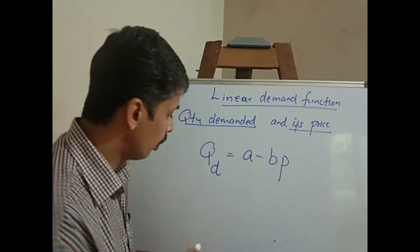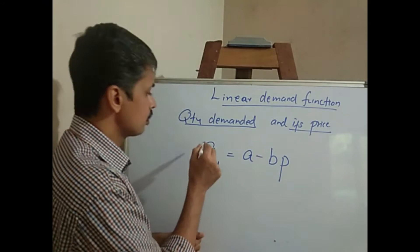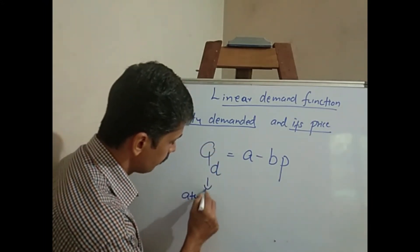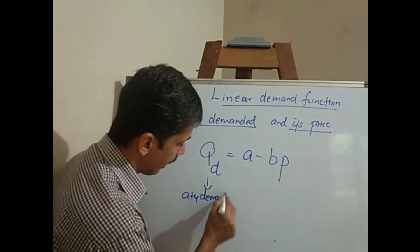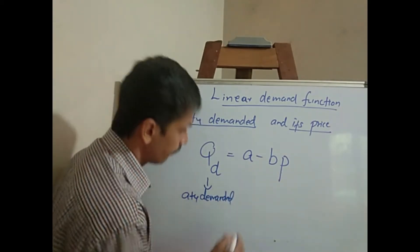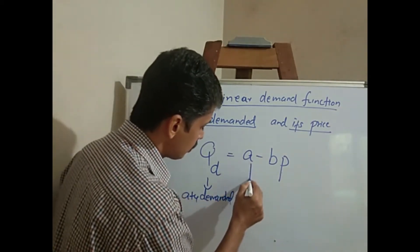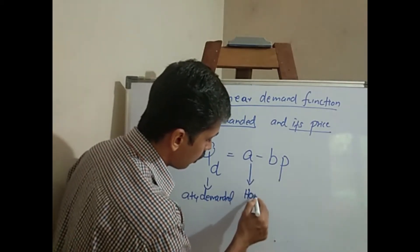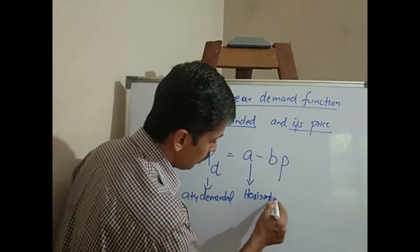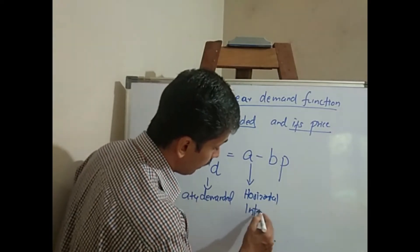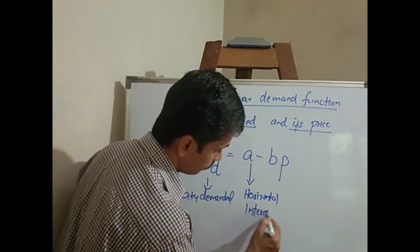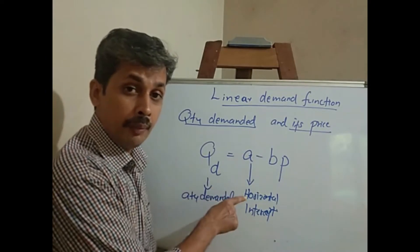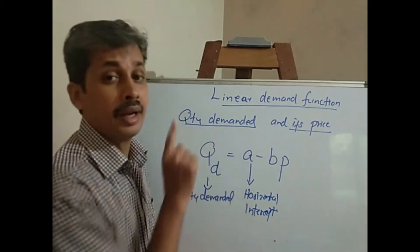Here, Qd is the quantity demanded. And 'a' is actually the horizontal intercept — that means what will be the quantity demanded of the commodity if the price is zero.